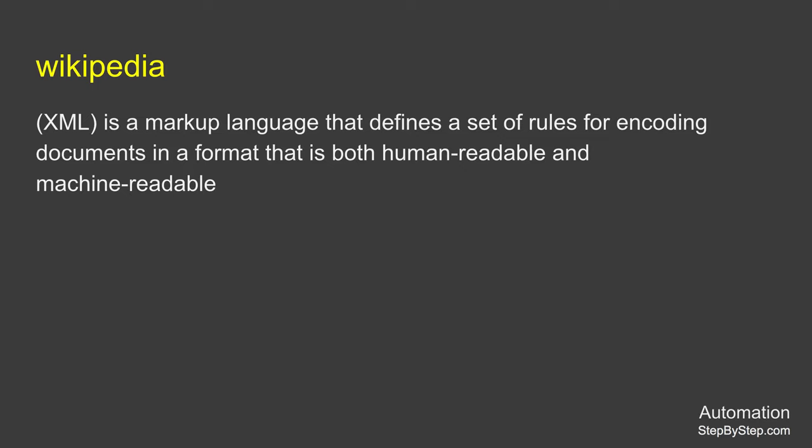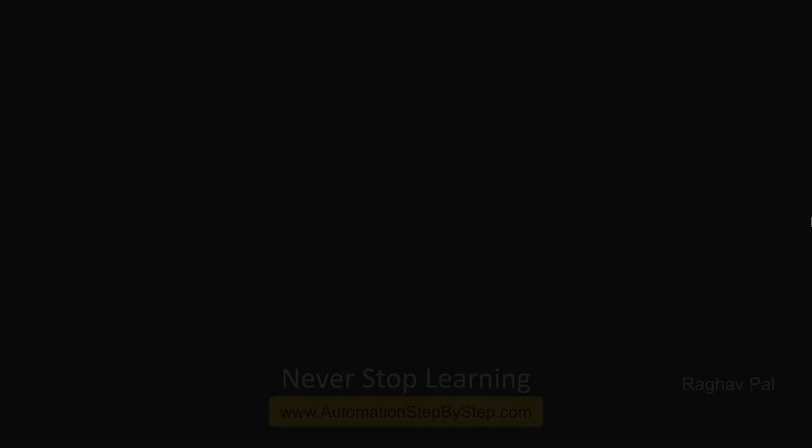According to Wikipedia, XML is a markup language that defines a set of rules for encoding documents in a format that is both human and machine readable. I hope this session was very useful. You can now go ahead and start your journey with XML. I will meet you in the next session — thank you for watching.